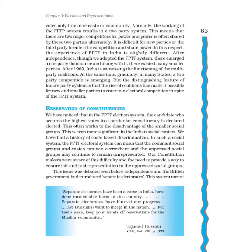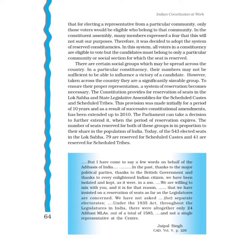This issue was debated even before independence. The British government had introduced separate electorates, meaning that for electing a representative from a particular community, only voters belonging to that community would be eligible. In the Constituent Assembly, many members feared this would not suit our purposes, and therefore it was decided to adopt the system of reserved constituencies, where all voters in a constituency are eligible to vote but the candidate must belong only to the particular community or social section for which the seat is reserved.